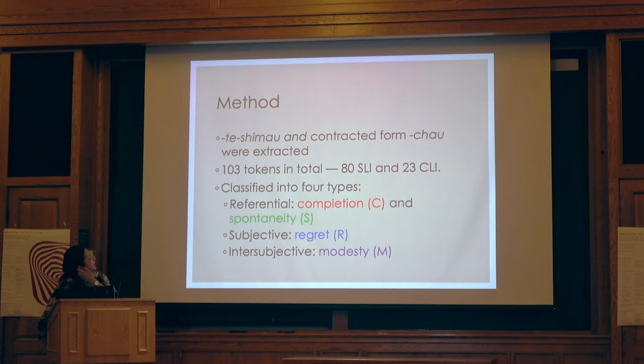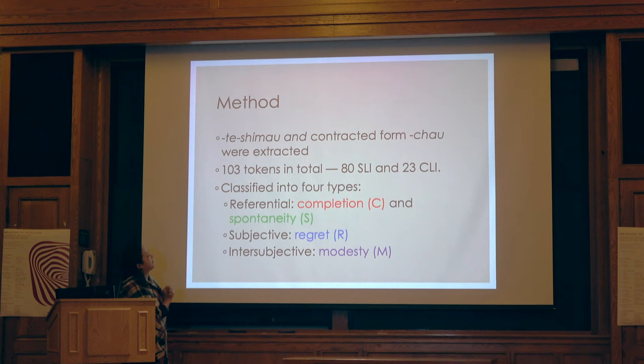Shimau and the contracted form chao were extracted — about 130 tokens. Out of all these hours of transcription, thinking about the burden on readers, I think this is pretty reasonable.